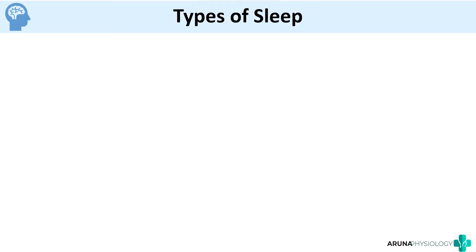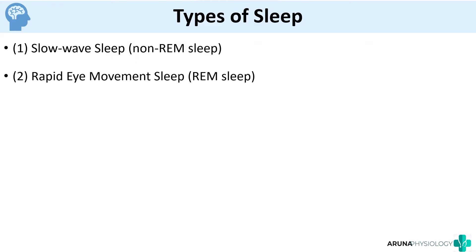There are basically two types of sleep. One is slow wave sleep or non-REM sleep, and the next one is REM sleep, otherwise called rapid eye movement sleep. So the full form of REM is rapid eye movement. We have slow wave sleep or non-REM sleep, and REM sleep.